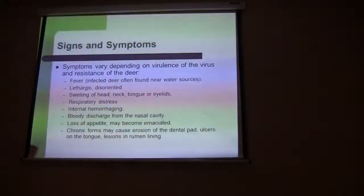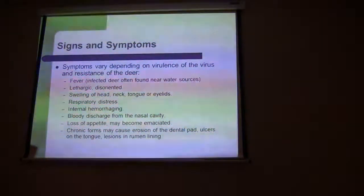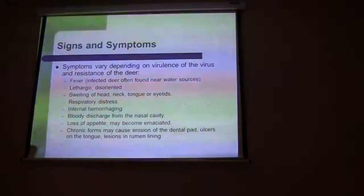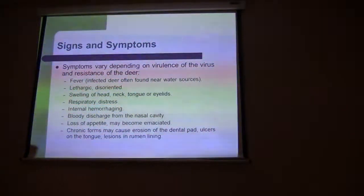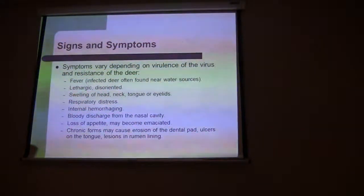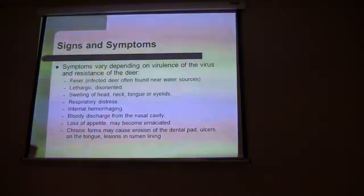There are a lot of symptoms of EHD, and some of these symptoms overlap with other diseases we could see in deer in South Dakota. But some symptoms are really characteristic of EHD or hemorrhagic disease. The deer develop a fever, which is often why you find them near a water source — they're trying to combat that fever. They can be lethargic or disoriented. Swelling of the head, neck, tongue, and eyelids is very characteristic. Respiratory distress and internal hemorrhaging are also characteristic signs of EHD.